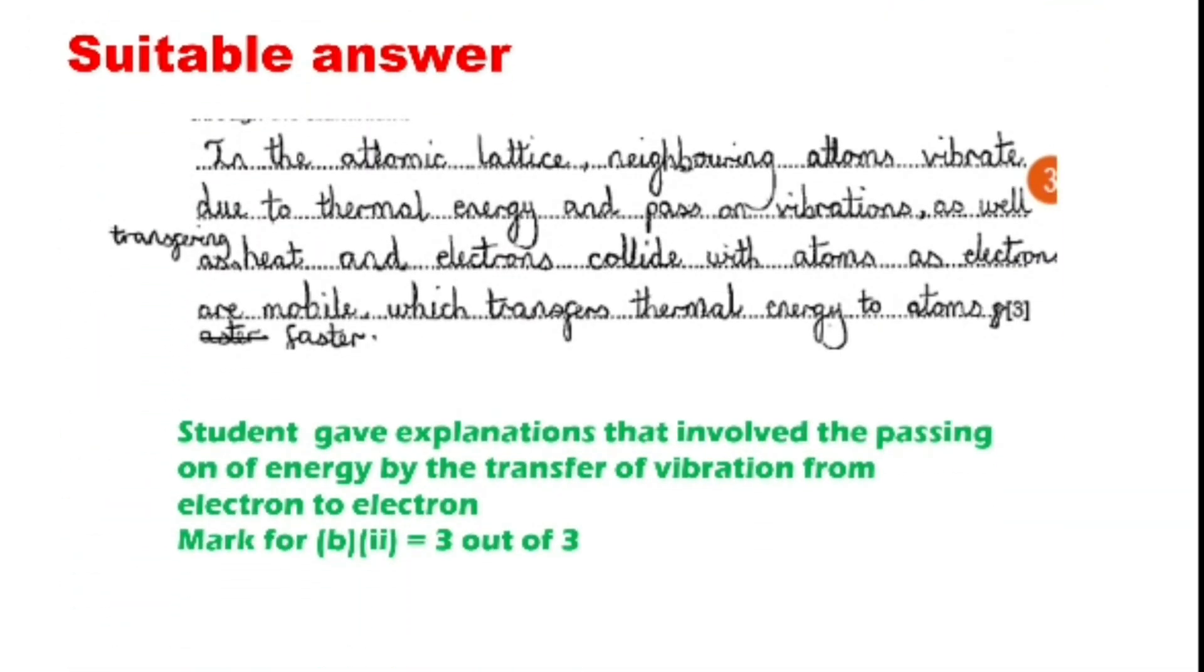Next, this is the best suitable answer: in the atomic lattice, neighboring atoms vibrate due to thermal energy and pass on vibrations as well, transferring heat, and electrons collide with atoms. As electrons are mobile, which transfer thermal energy to atoms faster. Here the student gave an explanation that involves the passing of energy by transfer of vibration from electron to electron, so three out of three marks is given.